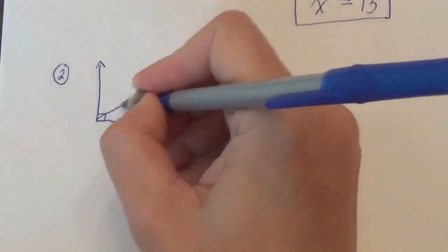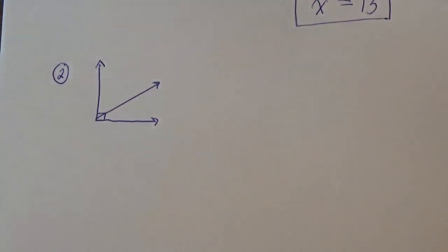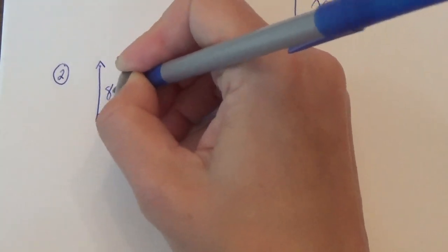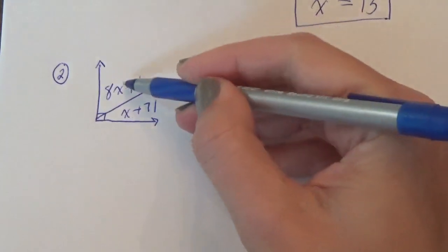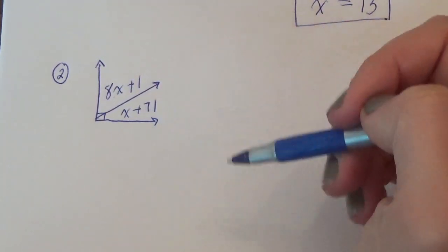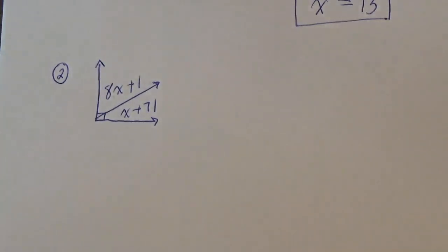Hopefully you guys can tell right away. That's a 90 degree angle. So whatever they give us here. So they're saying the top angle is 8x plus 1. This little guy, x plus 71. And let's go from there.